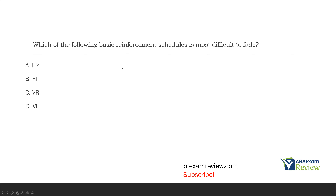Which of the following basic reinforcement schedules is most difficult to fade? Essentially, it's asking what's the strongest reinforcement schedule. We know it's not a fixed schedule — with fixed schedules they're very predictable. It's a variable schedule. The most difficult schedule to fade is the strongest schedule, which is a variable ratio. This is the slot machine effect — you have to keep responding and you never know when reinforcement is coming, so you keep responding over and over again. That's why it's difficult to fade; eventually the person never knows when it's coming, and if there's no clear pattern it's much more difficult to put on extinction. The strongest basic reinforcement schedule is the VR — the variable ratio schedule.